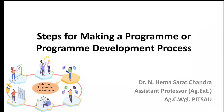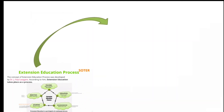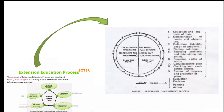Let's start. We already know this extension education process. In short, we can call it SOTR. To understand the extension program development process, this extension education process needs to be split up into a 9-step extension program development process. That means our 5-step extension education process can be split up into a 9-step program development process.